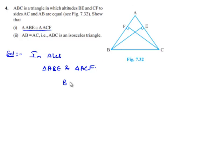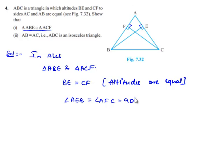BE will be equal to CF, as given that altitudes are equal. And second, in triangle ABE, angle AEB and in triangle ACF, angle AFC are equal to 90 degrees, as BE and CF are altitudes to the sides.